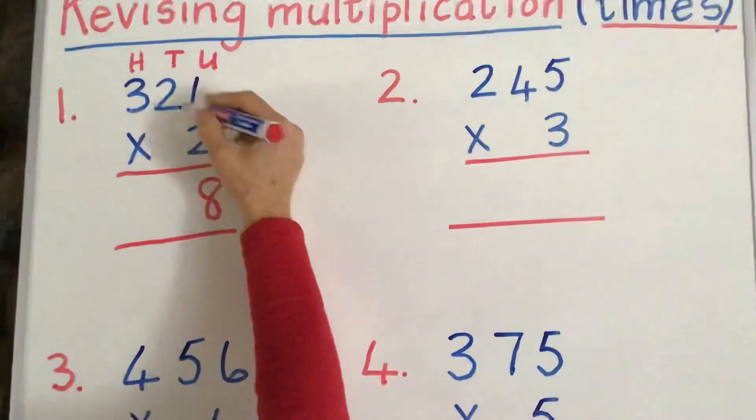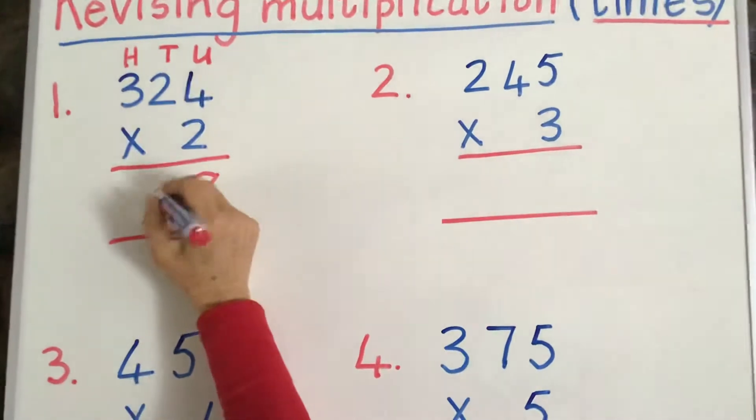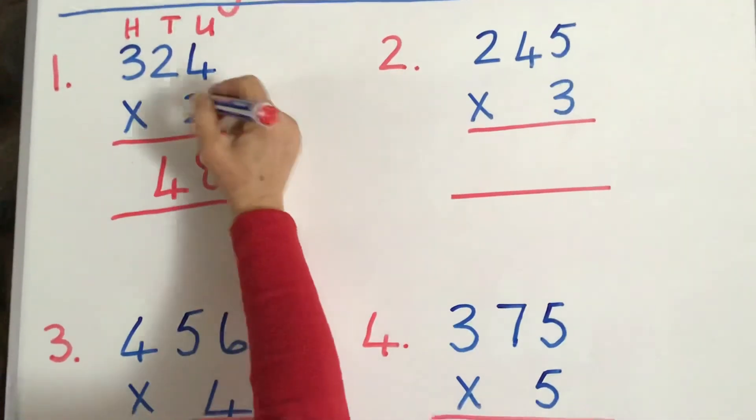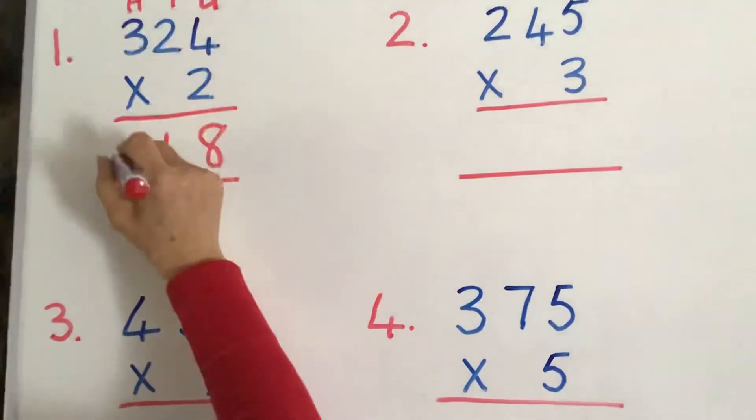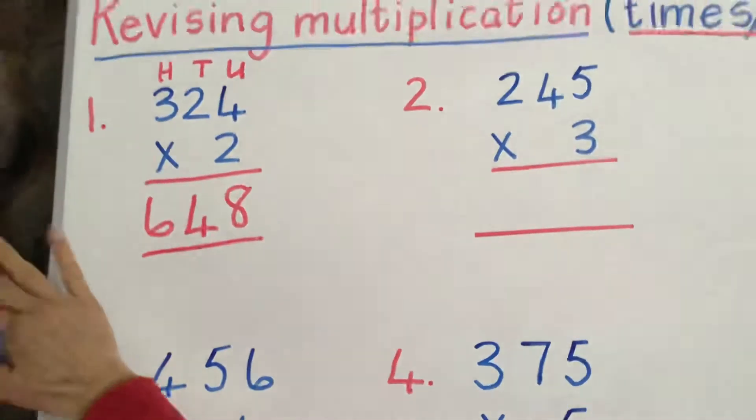2 times 2, maybe you use it as a 2, because it's 2 tens, 2 times 2 is 4. 2 times 3 is 6. See how easy that is, there is nothing to carry with any of those.